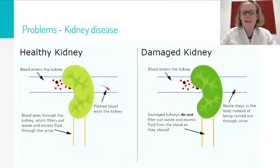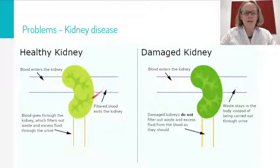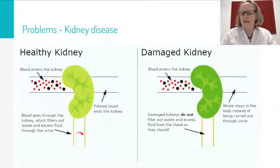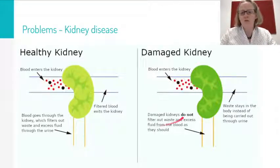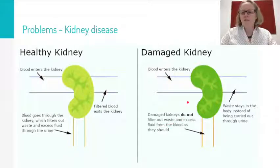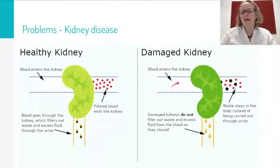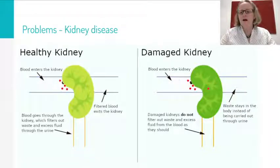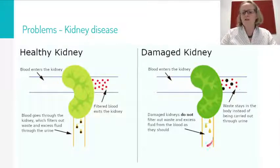cleaned and the wastes have gone into the urine. Whereas the damaged kidney here on the right — dirty blood, or blood with wastes, enters the kidney, but the damaged kidneys are unable to produce urine with waste in it.